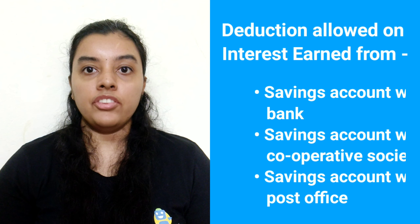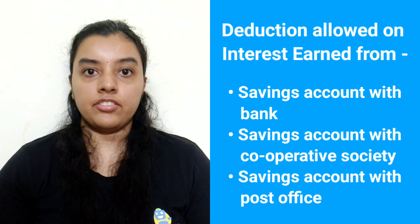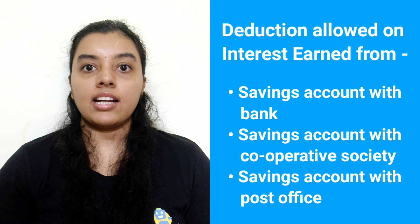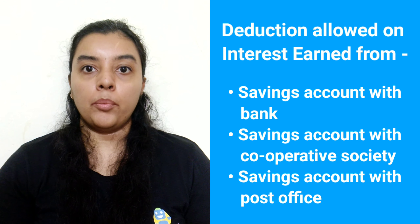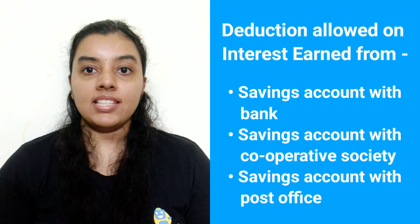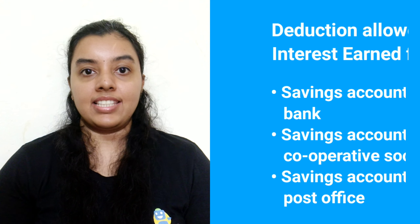Section 80TTA provides a deduction of Rs. 10,000 on interest income. This deduction is available to an individual and HUF. It is allowed on interest earned from a savings bank account with a bank, a savings account with a cooperative society carrying on the business of banking, or a savings account with the post office.